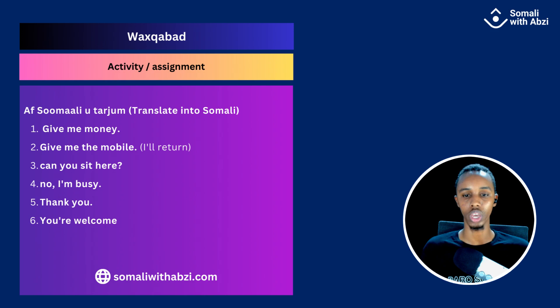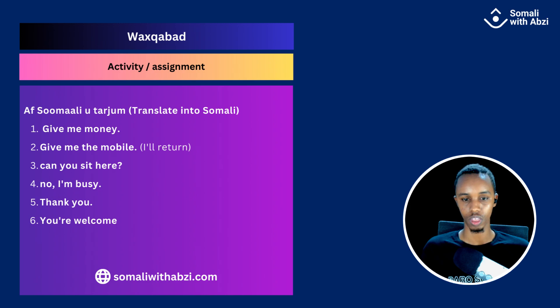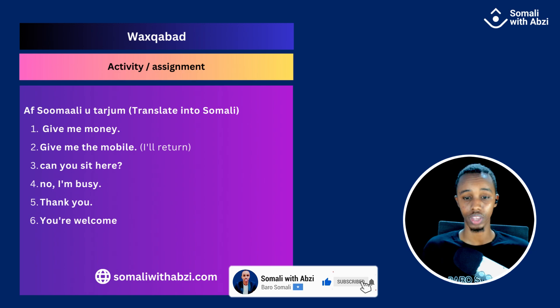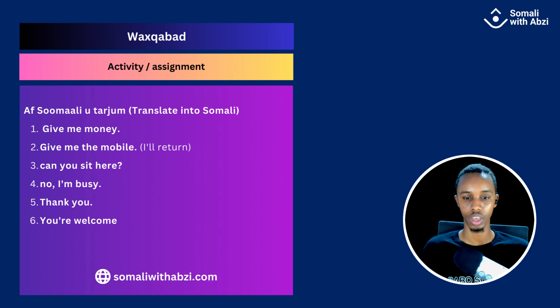Now we're going to do the activity or assignments — 'af somali utarjum', which means translate into Somali. The first question: give me money. The second: give me the mobile (meaning you will return it — so you have to choose between 'isi' or 'e-deeb', you know which to use). The third: can you sit here? The fourth: no, I'm busy. The fifth: thank you. And the last one: you're welcome. You're going to write all these and share your voice note on our Boro Somali public group.